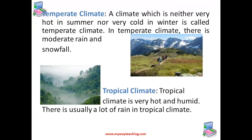Temperate climate is a climate which is neither very hot in summers nor very cold in winters. In temperate climate, there is a moderate amount of rain and snowfall.